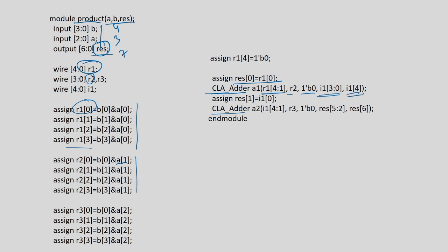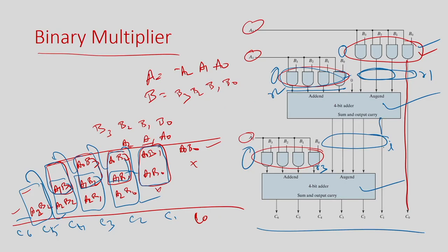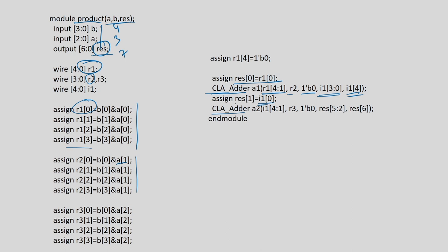The second adder takes I[3:1] and R3 with carry-in 0, giving result bits [2] through [5], and the carry out becomes result[6]. This is how the multiplier is developed, reusing carry-lookahead adder modules that I already have, instantiated twice.